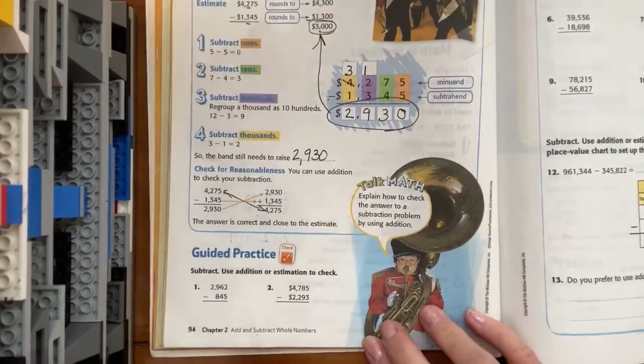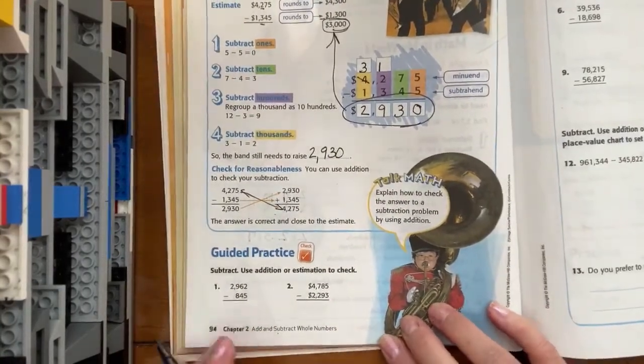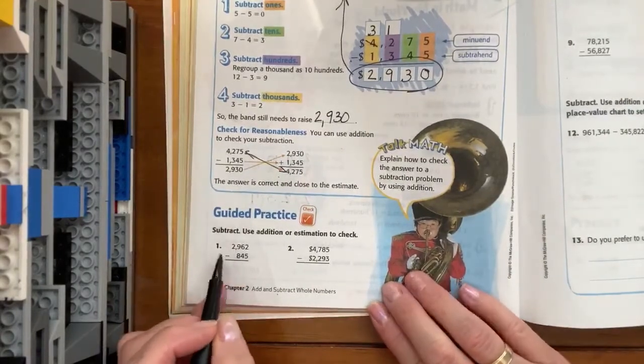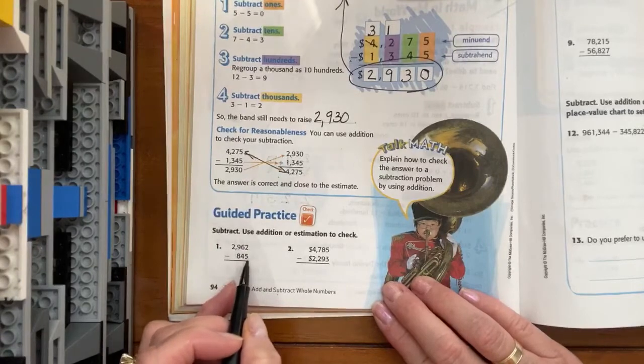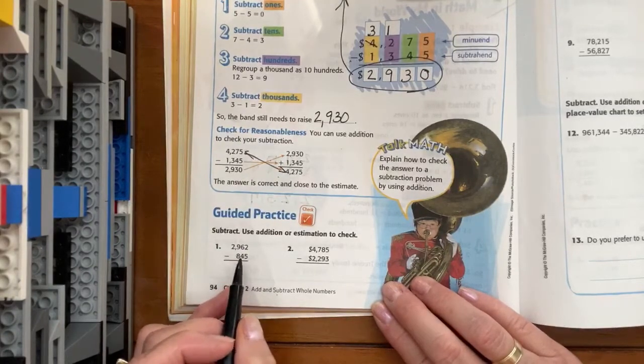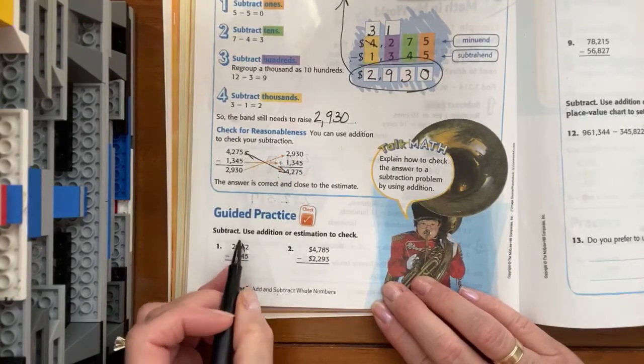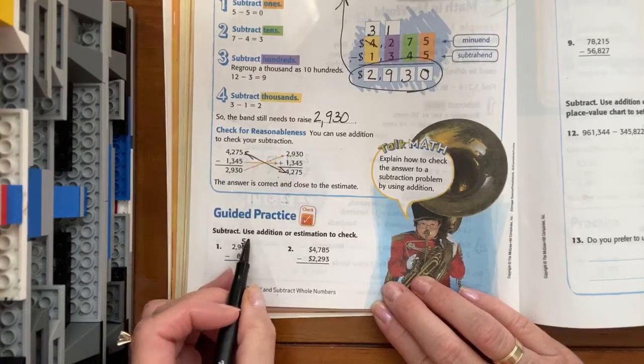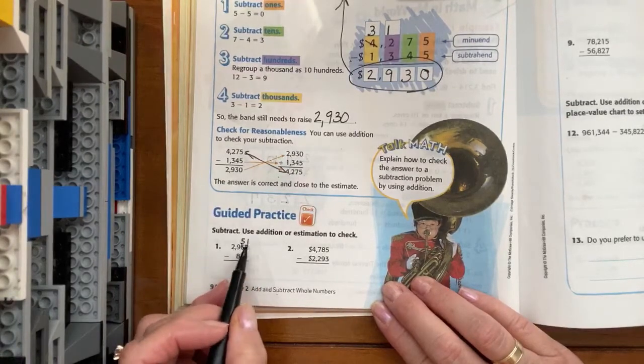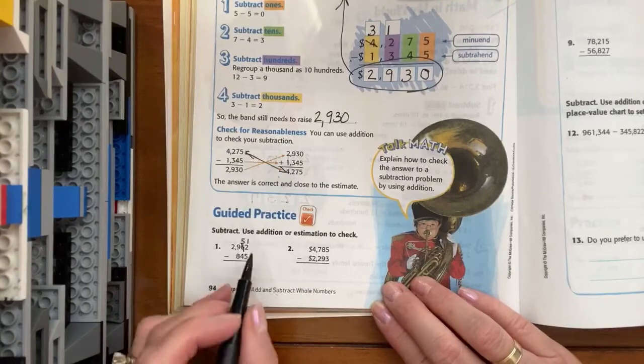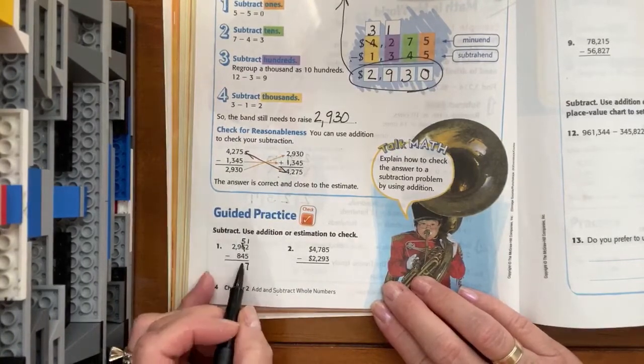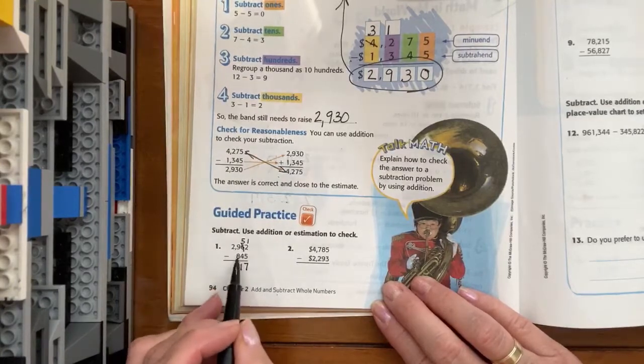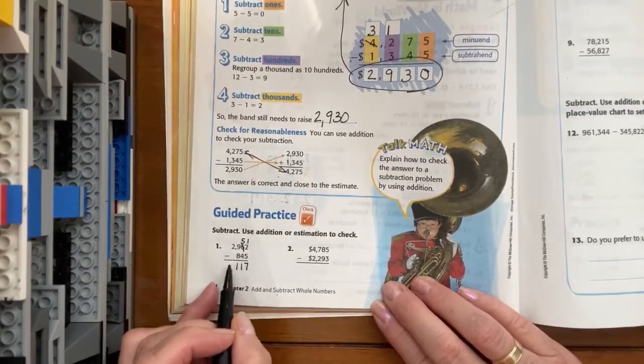So let's work one. All right? So let's evaluate our problem. I have two ones, and I'm supposed to take away five. Can I do it? No. I'm going to have to go next door, and I'm going to have to take a group of ten. Now I have twelve. Twelve minus five leaves us with seven. Moving on to the tens. Five minus four is one. Nine minus eight is one. And two minus nothing is two.